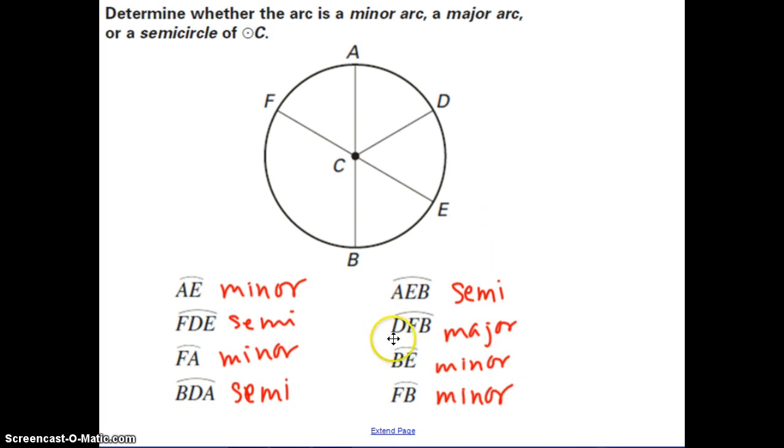Now remember, generally, minor arcs are always listed with two letters, and major arcs are always listed with three. Semicircles could be listed as three or two, so just make sure you're careful with how many letters they use to label the arc.